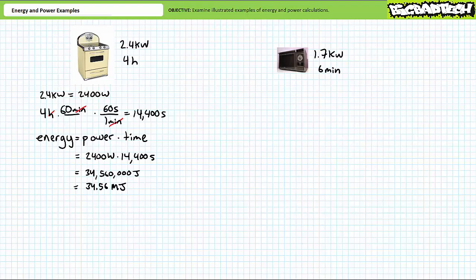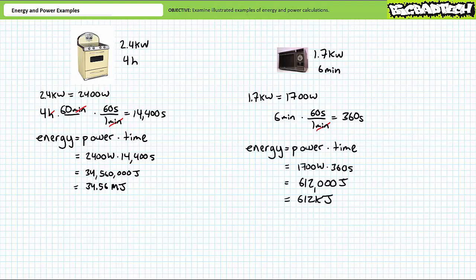Let's do the same thing for the microwave oven. Using our understanding of engineering prefixes, 1.7 kilowatts is equivalent to 1,700 watts. A unit conversion demonstrates that six minutes is equivalent to 360 seconds. Energy is power times time. 1,700 watts, or 1,700 joules per second, expressed for a period of 360 seconds demonstrates the microwave oven uses 612,000 joules, or more appropriately, 612 kilojoules.